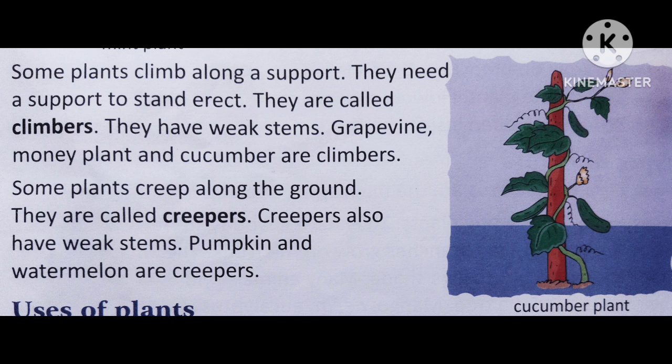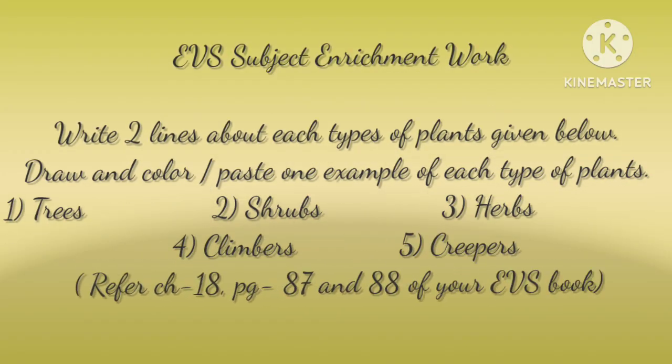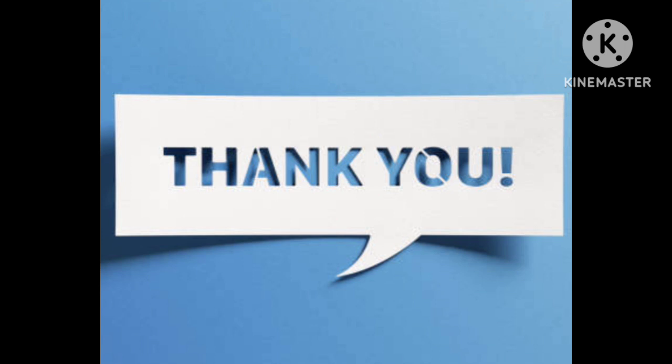So children, these are the different types of plants we have studied: trees, shrubs, herbs, climbers, and creepers. Go through them in detail. In our next class we will start the uses of plants. The subject enrichment work you have received for EVS is from this part, so this should help you do the work easily. Read the chapter thoroughly up to where we have studied, and learn all the hard words. We will continue in our next class. Till then, take care. Thank you.